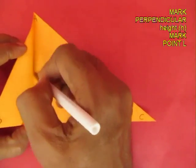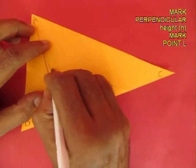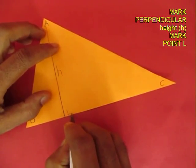Fold the perpendicular and mark the line with a pen. The height is H.